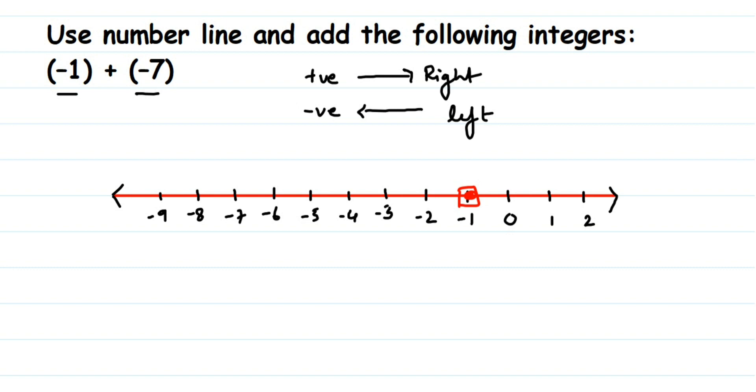And how many numbers am I adding? Minus 7, so 7 numbers, right? So it will be 1, 2, 3, 4, 5, 6, 7. So I'm going to stop at minus 8. So minus 1 plus minus 7 is minus 8.